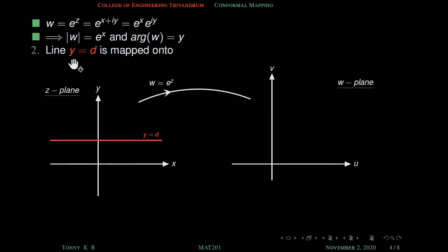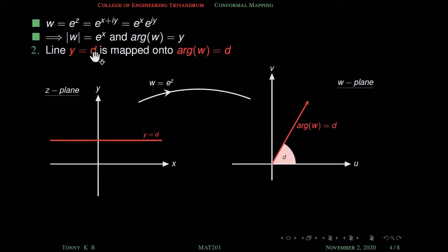Similarly, the image of y equal to d — a straight line parallel to the x-axis and passing through d — is such that when y equals d, argument of w becomes d. That means y equal to d is mapped onto argument of w equal to d, which is a ray.